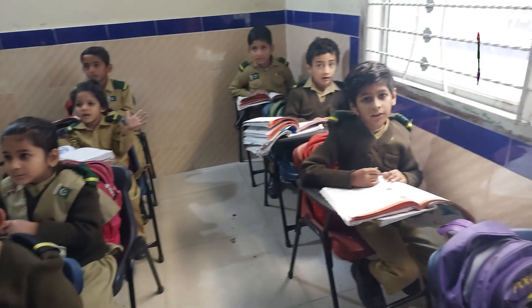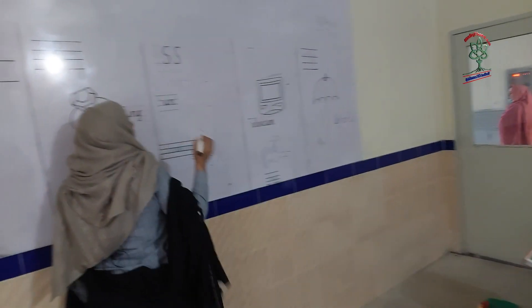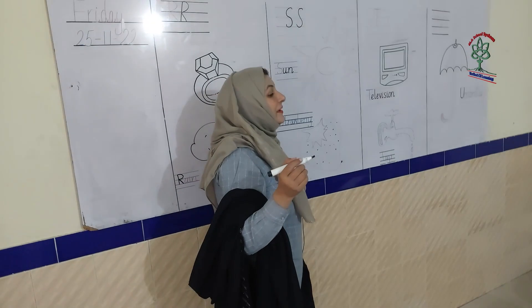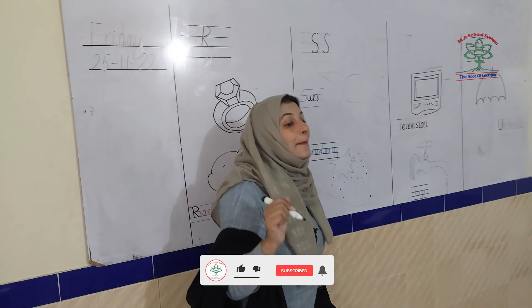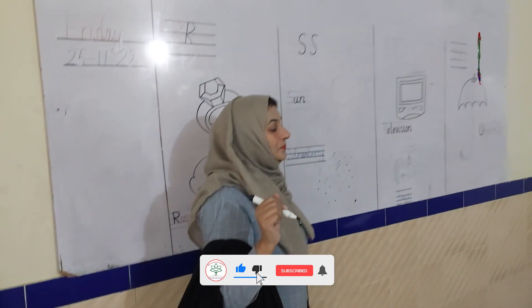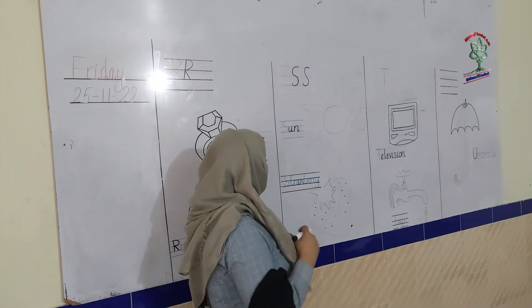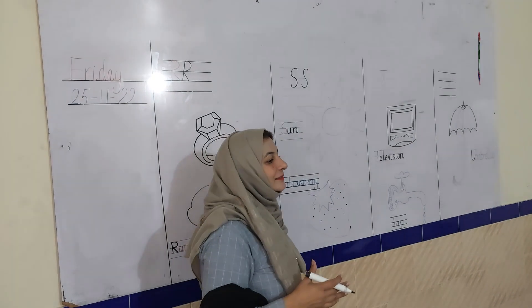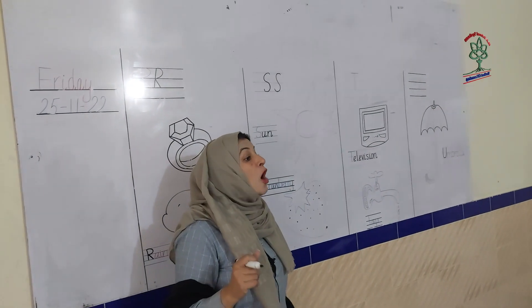Start from the first line, make a cap, thumbs and down, go back — it will make capital S. Sun, strawberry, snake, socks.